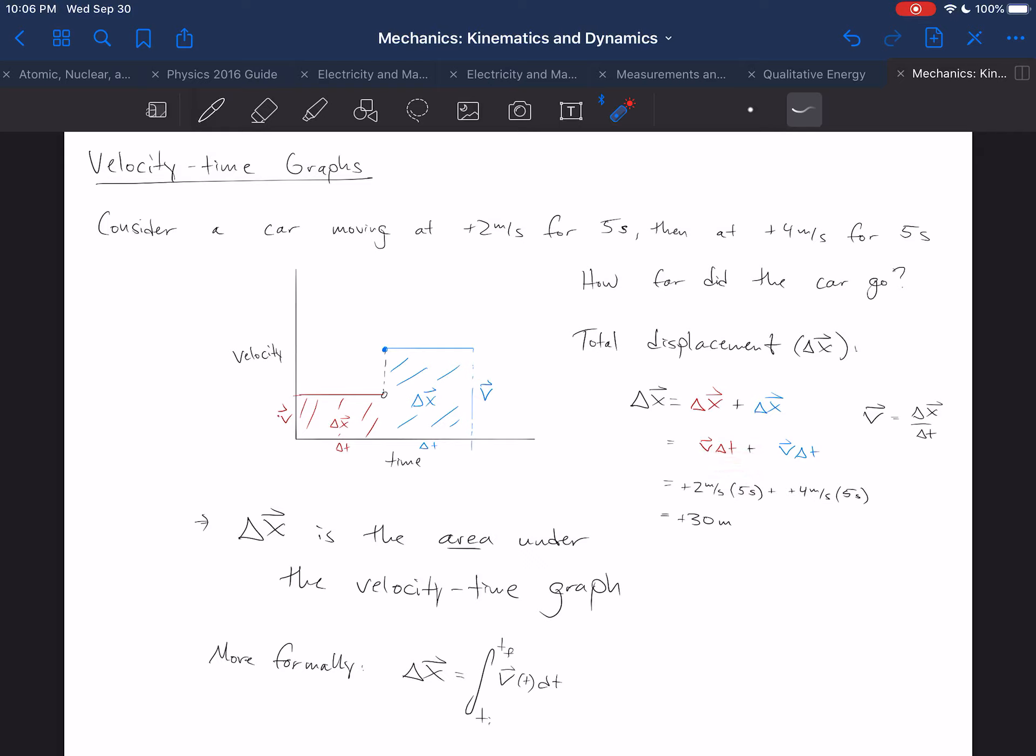So positive 2 meters per second times 5 seconds plus positive 4 meters per second times 5 seconds gives you positive 30 meters. And the really essential part to recognize here is that this process has a direct graphical interpretation.